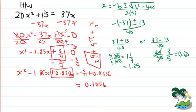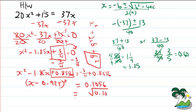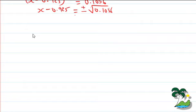Since we have (x minus 0.925)² equals 0.1056, we take the square root of both sides. The squared term cancels, giving us x minus 0.925 equals plus or minus the square root of 0.1056. We've basically reached our solution.